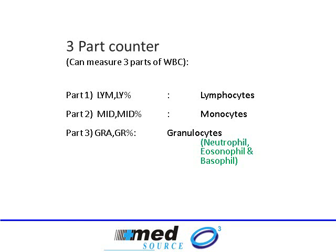On the other hand, a five-part hematology analyzer will also be able to measure the individual amounts of neutrophils, eosinophils, and basophils. So a three-part cell counter gives you results for lymphocytes, monocytes, and granulocytes, while a five-part gives you lymphocytes, monocytes, neutrophils, eosinophils, and basophils. Both the HumaCount 30TS and EuroCount TS are three-part hematology analyzers.